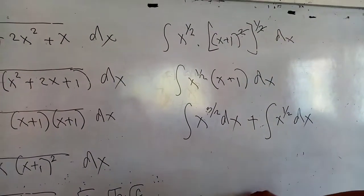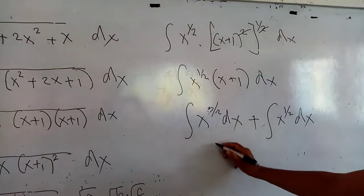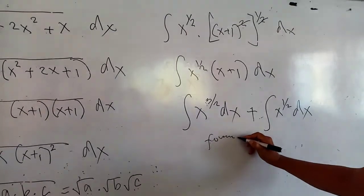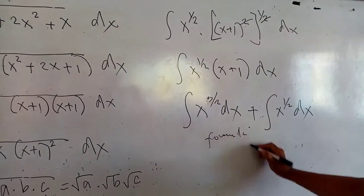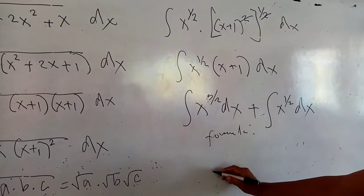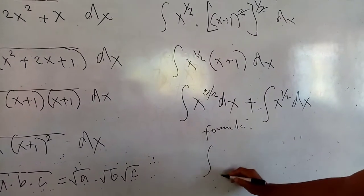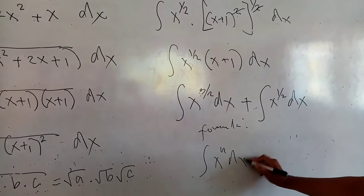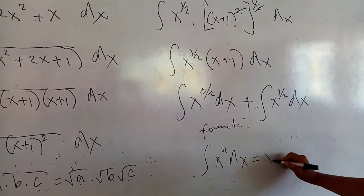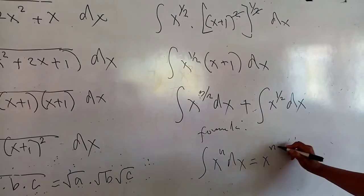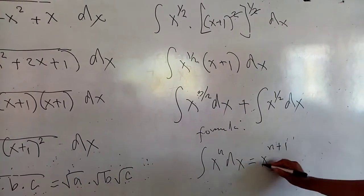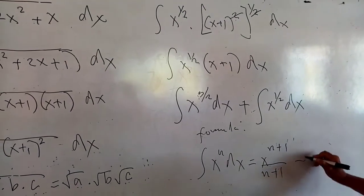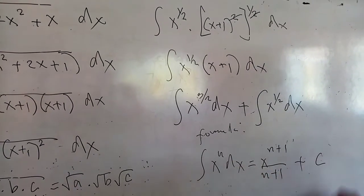Now, to use your power integration formula — the integration of x to the n times dx will be x to the (n plus 1), divided by (n plus 1), plus the constant of integration c.